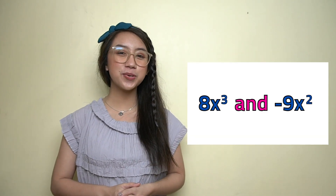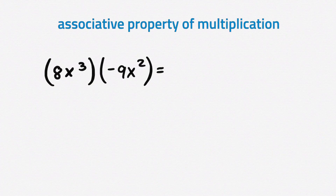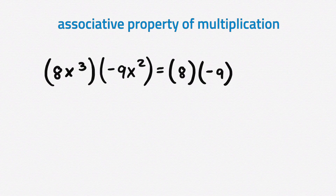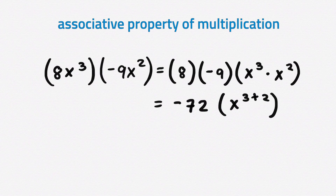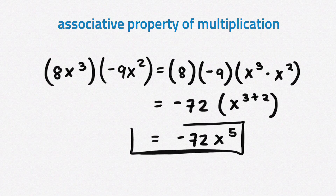Let's begin by multiplying two monomials together. We multiply the coefficients then multiply the variables using the product of powers. Let's find the product of these two monomials. We will use the associative property of multiplication to rearrange the factors first. Multiply the coefficients: 8 times negative 9 equals negative 72. Then multiply the variables using the product of powers: 3 plus 2 equals 5. Therefore, the final product is negative 72x raised to the power of 5.